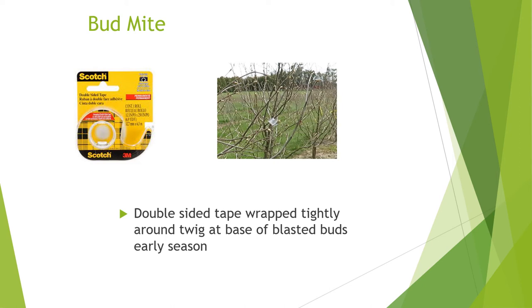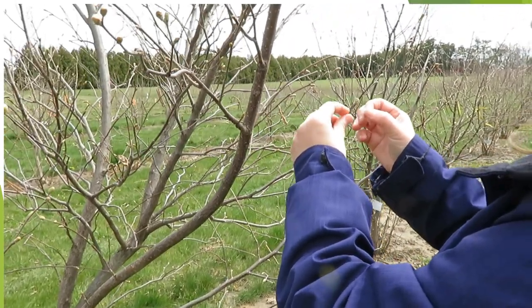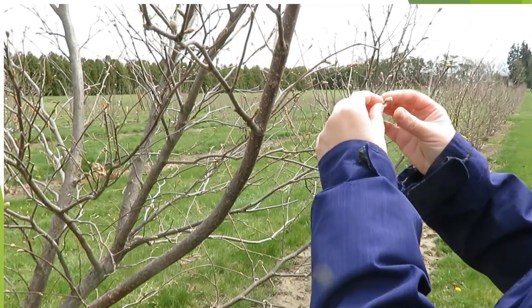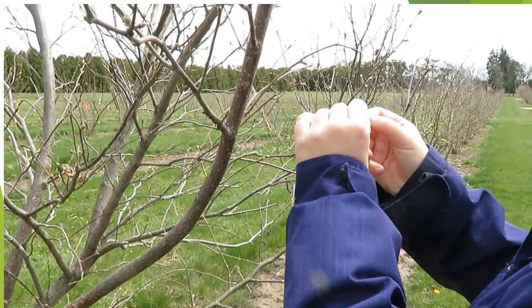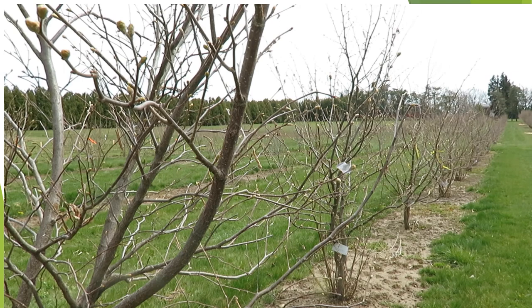In hazelnuts, the most common trapping technique is for bud mites, and it's really simple. It uses just a double-sided scotch tape — purchased from Staples, Walmart, or any office supply store — which is wrapped tightly around the twig, both at the base and above the blasted buds, done very early in the season. As the mites leave the buds, they get trapped on the surface of the tape, and then you can examine them with a hand lens. This just shows the general technique: a piece of double-sided tape wrapped tightly between a blasted bud and another bud, with a little piece sticking out at the end so you can grab it when you want to look at it.